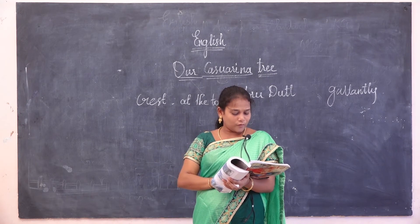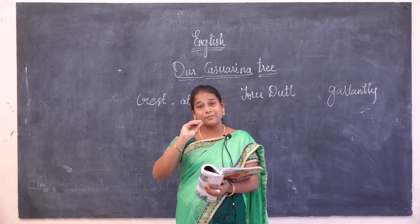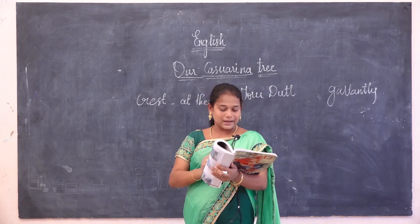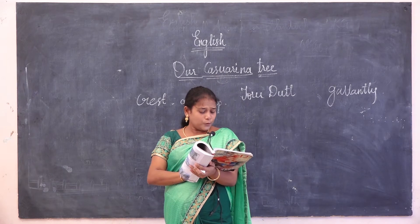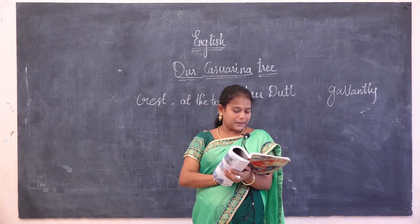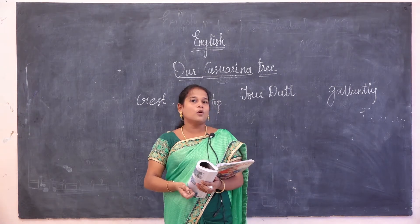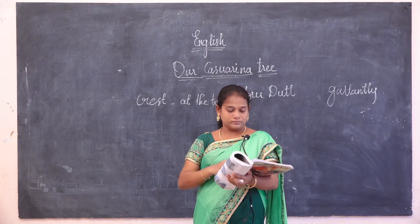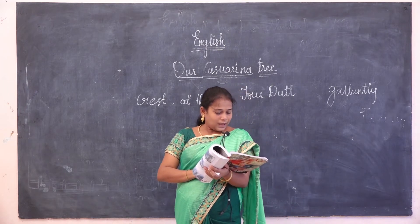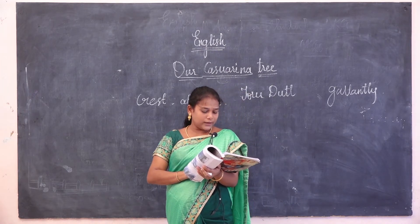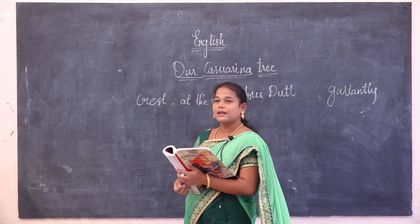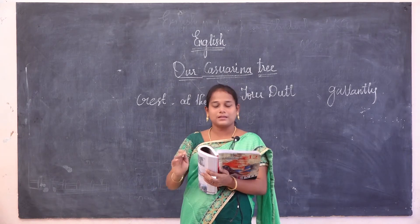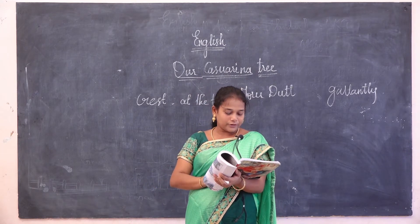'Watching the sunrise while on the lower boughs his puny offspring leap about and play.' The baboon sits alone at the top watching the sunrise, while 'puny' — meaning the young ones of the monkey — its offspring are playing and leaping on the lower boughs. 'And far and near kokilas hail the day' — kokilas is a bird like the koel in Tamil, similar to the nightingale, known for singing very nice songs. 'Hail' means welcoming the day by singing a song.